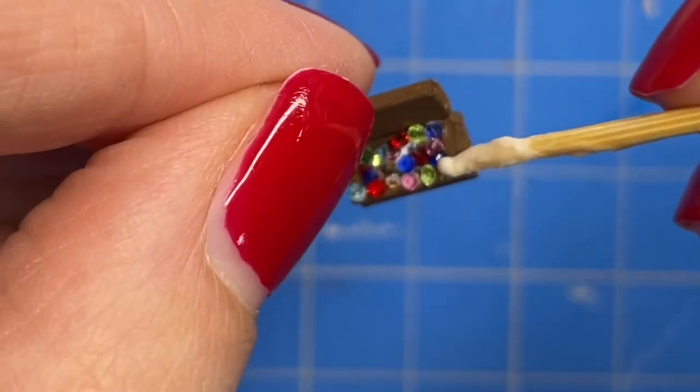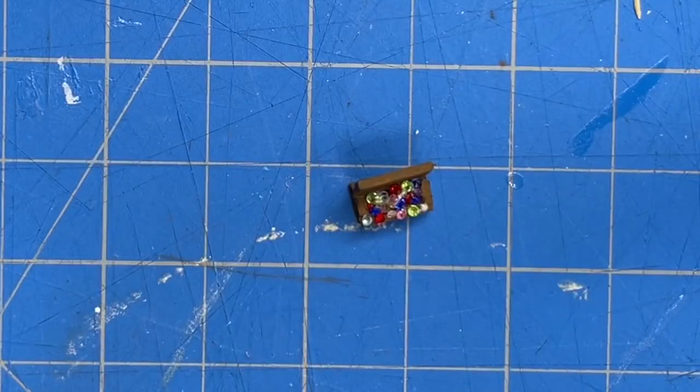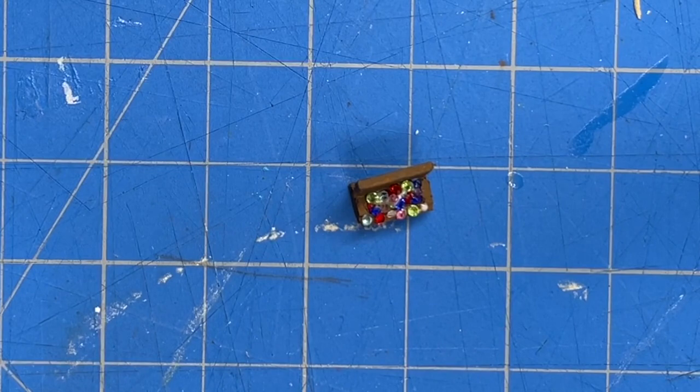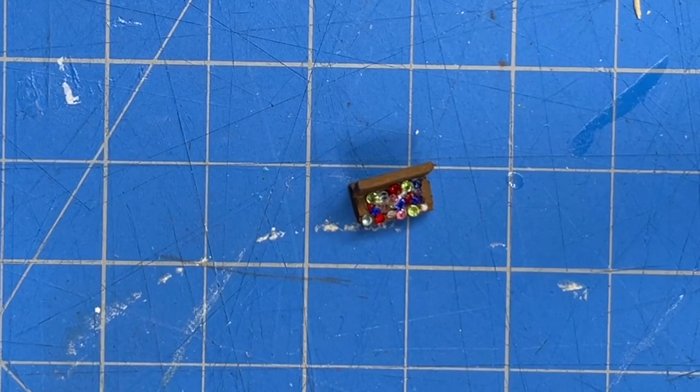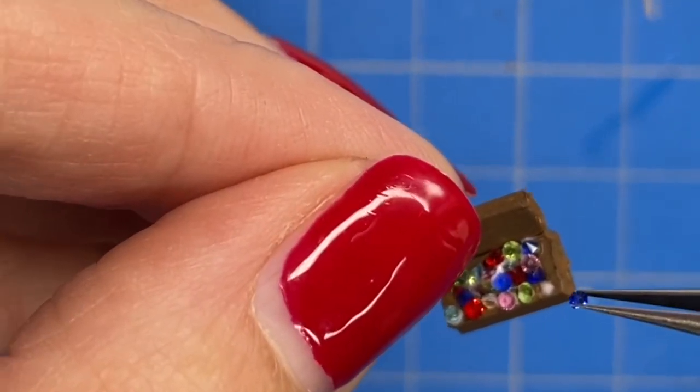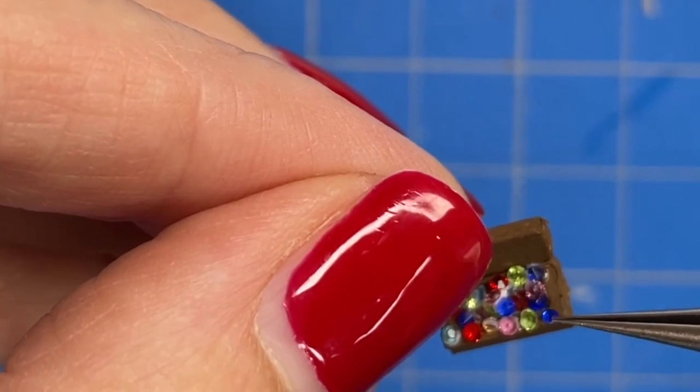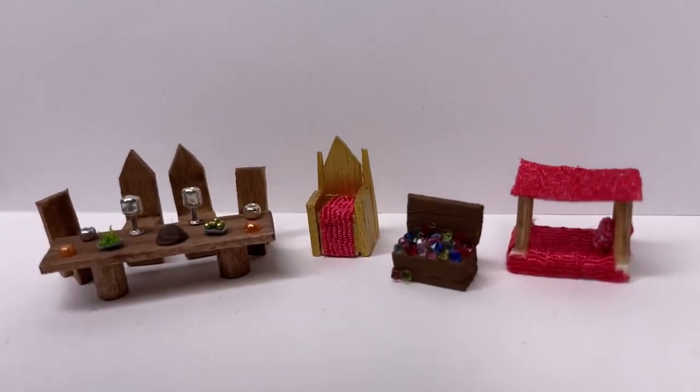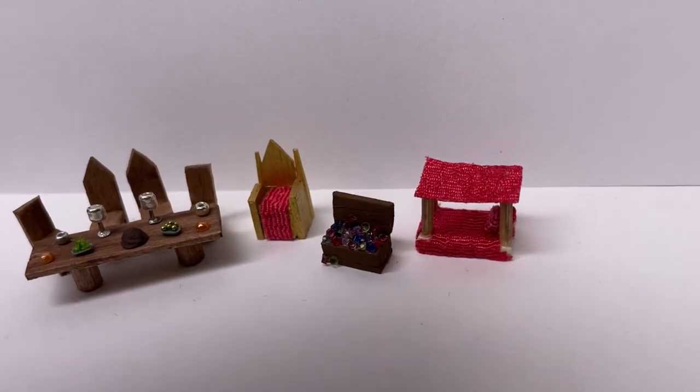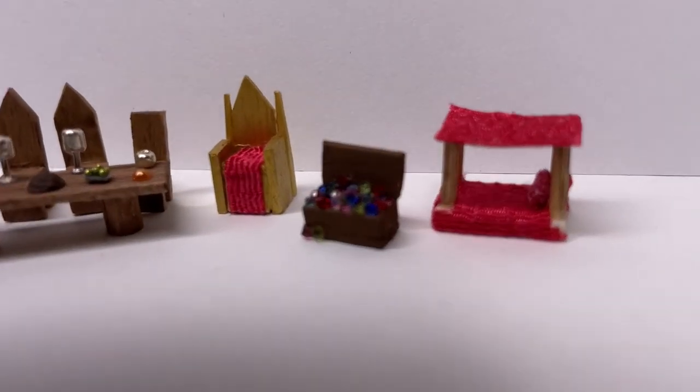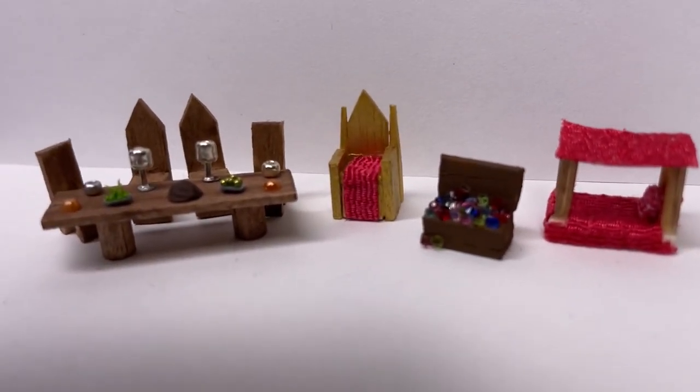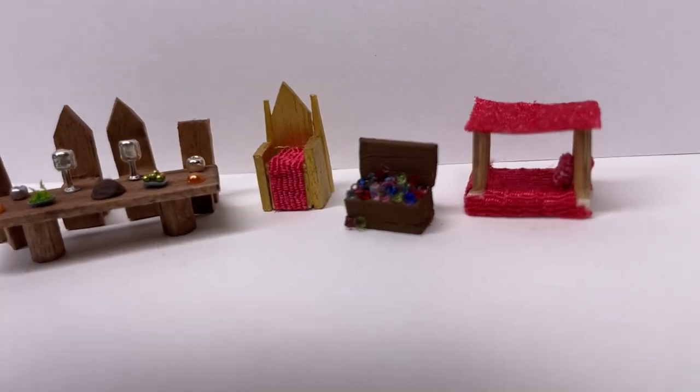I glued the lid on to the chest in an upright position so that you could see all of the jewels and then I glued on some jewels to the rim so it looked like they are overflowing from the chest. And here is all of the furniture together that I made. Let me know down below in the comments which item is your favorite. Mine has to be the treasure chest because who doesn't love some jewels?